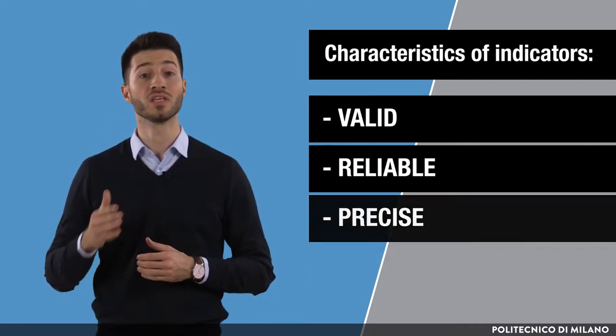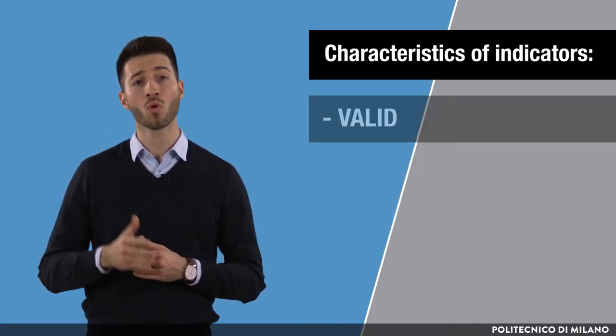We need indicators at all levels of the result chain if we want to measure change in an effective way, and they should be defined before the start of the policy implementation in order to facilitate proper monitoring and evaluation.